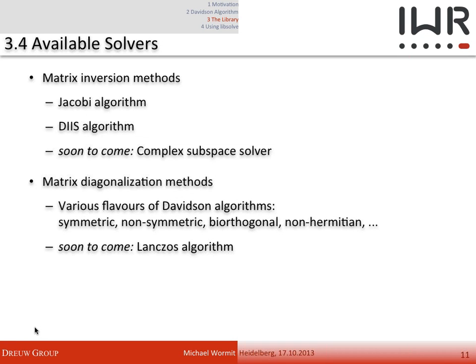Currently available solvers in Libsol are matrix inversion methods — the Jacobi algorithm, the DIIS algorithm, and a complex subspace solver for matrix inversion with complex numbers using a subspace scheme like Davidson. We also have matrix diagonalization methods including Davidson algorithms for symmetric, non-symmetric, biorthogonal, and non-Hermitian cases. There is also a draft version of the Lanczos algorithm which will be merged into the main trunk, providing a different type of diagonalization method.